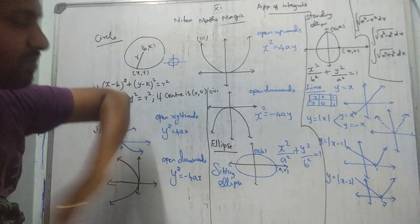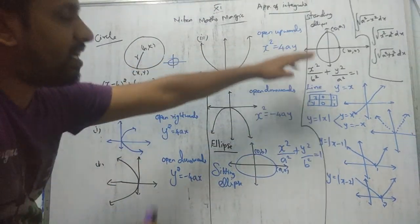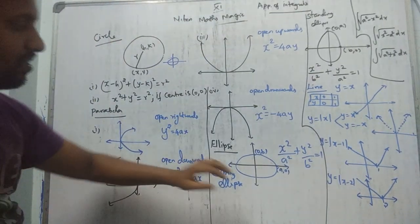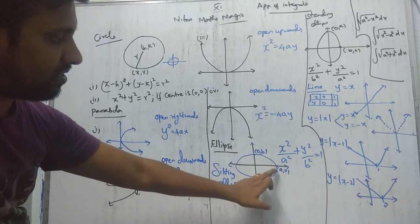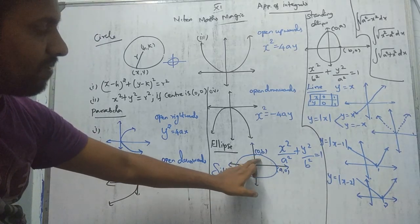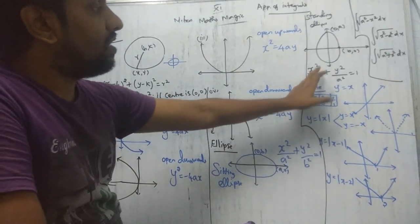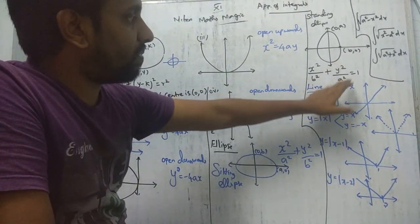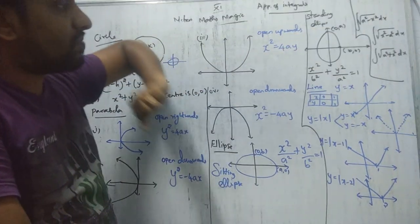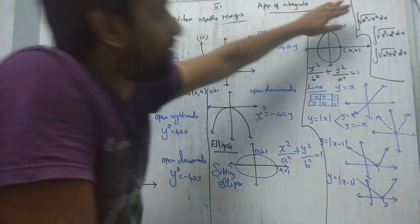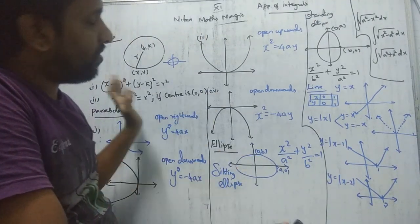Third: Ellipse. There are two types. A sitting ellipse on the x-axis: x²/a² + y²/b² = 1, with vertices at (a, 0) and (0, b). A standing ellipse on the y-axis: x²/b² + y²/a² = 1, with vertices at (b, 0) and (0, a). These three formulas from conic sections, section 7.7, will be useful for this entire chapter.